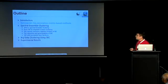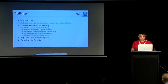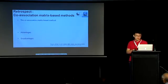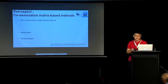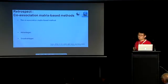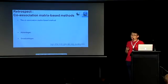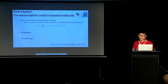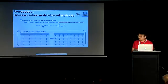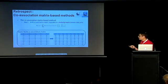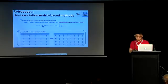Now we introduce the co-association matrix-based method. We first introduce what is the co-association matrix-based method, and then discuss some advantages and disadvantages. The co-association matrix-based method usually has two steps. The first step is to build a co-association matrix based on the basic partitions. The co-association matrix S measures how many times a pair of data appears in the same cluster.